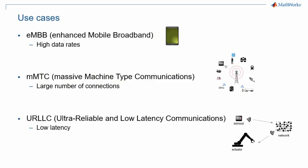Let's talk about use cases first. 5G NR is not just a faster version of LTE. The enhanced mobile broadband use case, or eMBB, supports higher data rates. Several other use cases have been defined: Massive Machine Type Communications, or mMTC, where a larger number of devices are connected to one base station; and Ultra Reliable and Low Latency Communications, or URLLC, where devices rely on very short latency to perform their task.